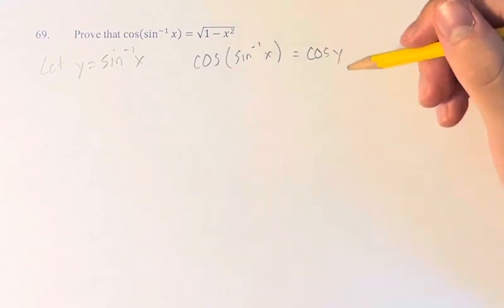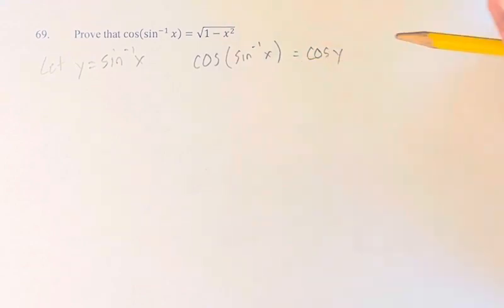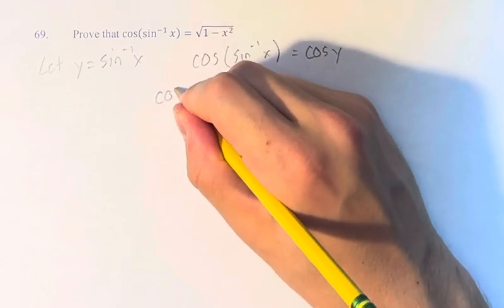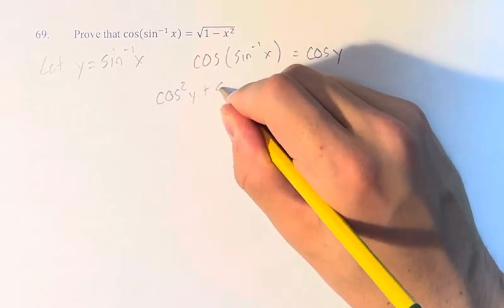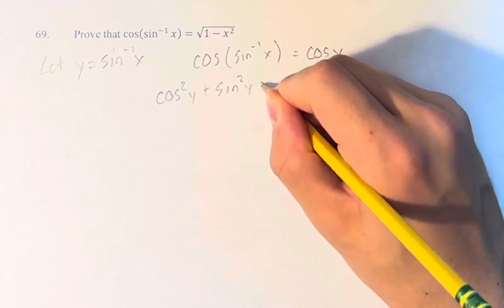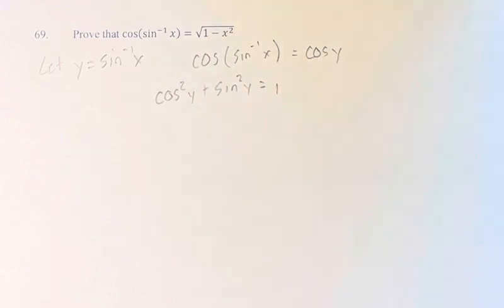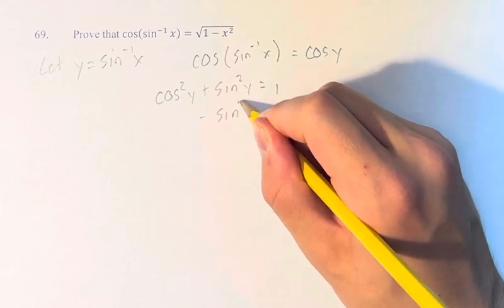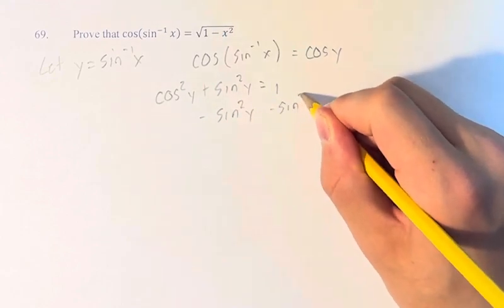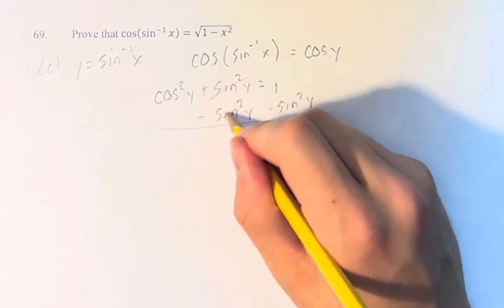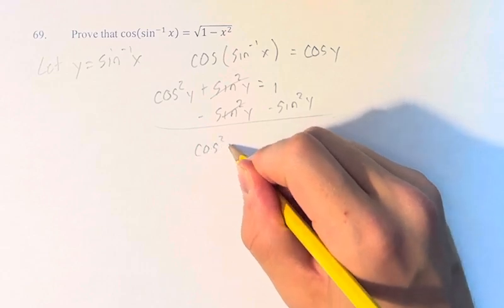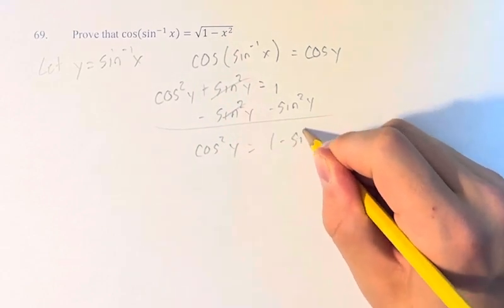And we are going to use an identity in trigonometry that cosine squared plus sine squared equals 1. We can therefore say that subtracting sine squared from both sides, that cosine squared y equals 1 minus sine squared y.